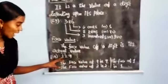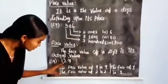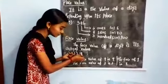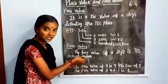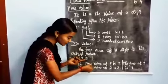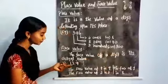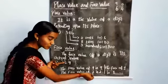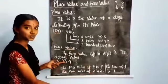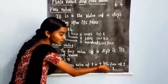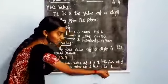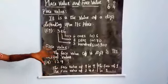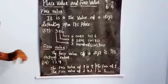Now look at the example: 129. Look at 9 — the face value of 9 is 9. Then 2: the face value of 2 is 2. Then 1: the face value of 1 is 1. Because face value means the actual value.